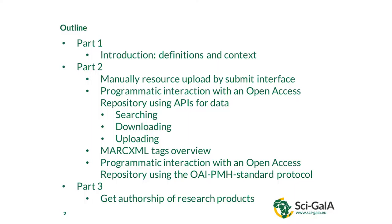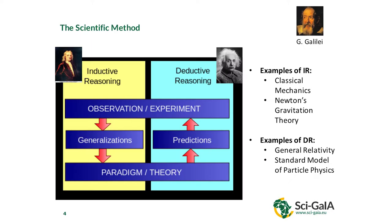Part one. When scientists do research, they apply a method proposed for the first time by Galileo Galilei at the beginning of the 17th century, called the scientific method. You start by looking at nature, you run experiments, you try to understand what's going on, and then you build theories. This is common to all scientific disciplines.